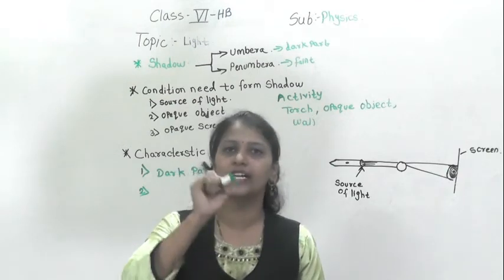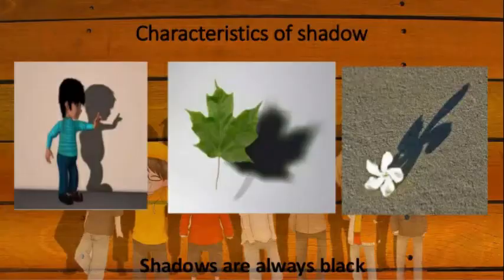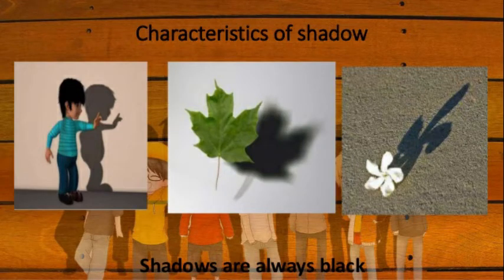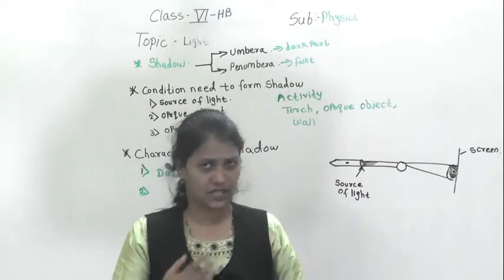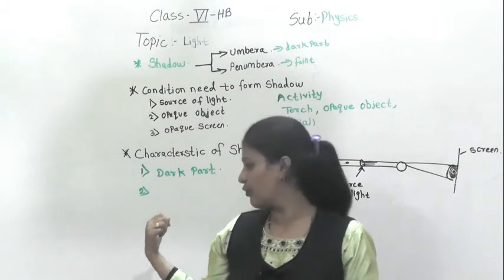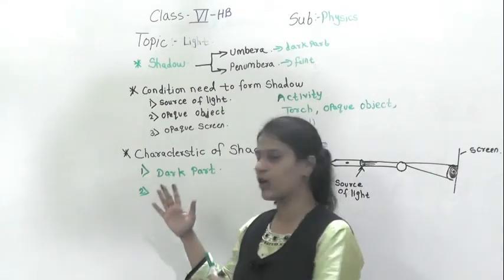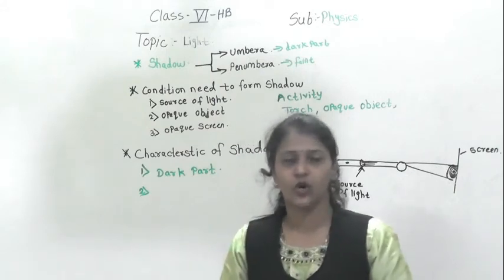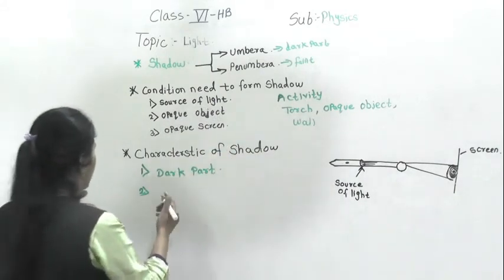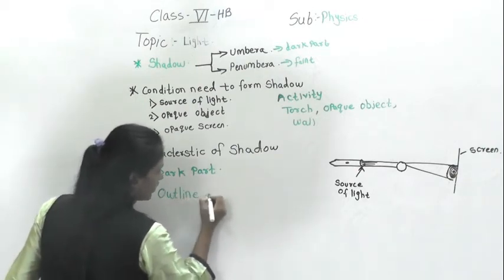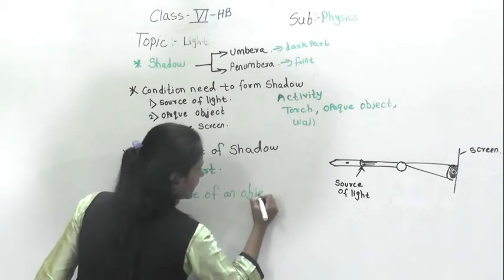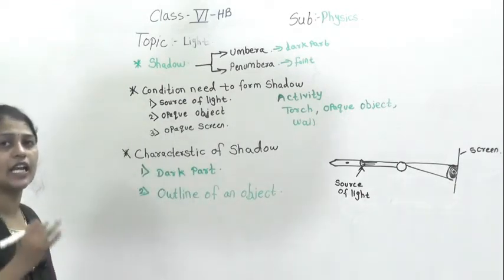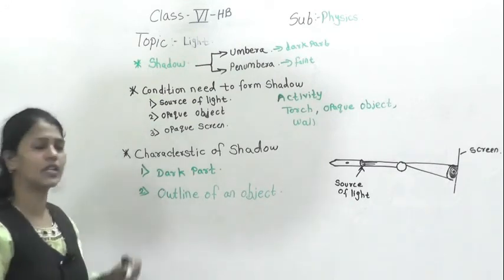Second, you can see only the outline of the shadow. You will not get any detailed image of an object. For example, if my shadow is cast on a wall, you will just get the outline — you will not see what is written on my hand or any fine detail. You get only the outline of an object.